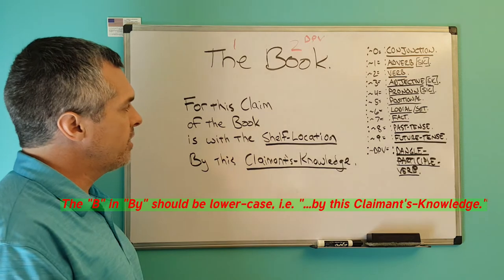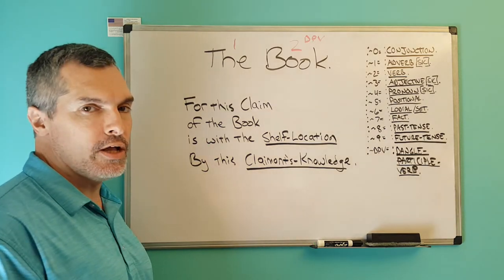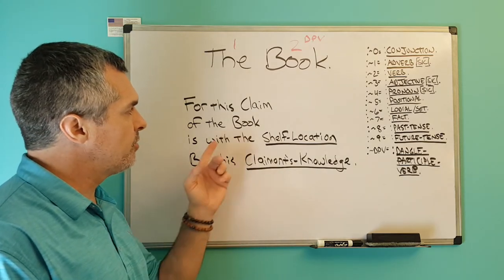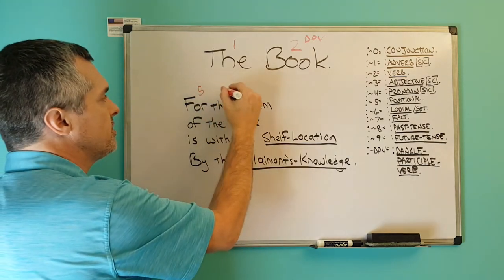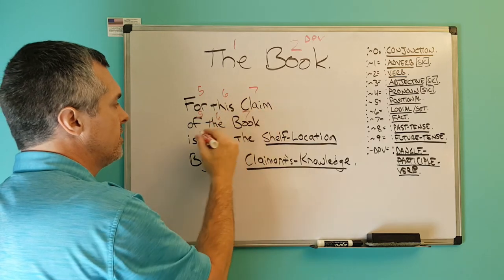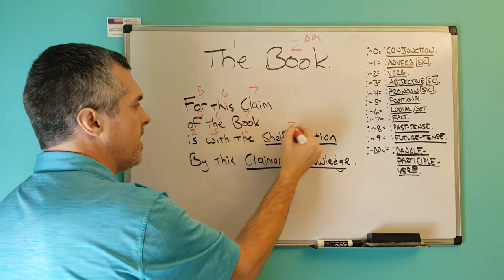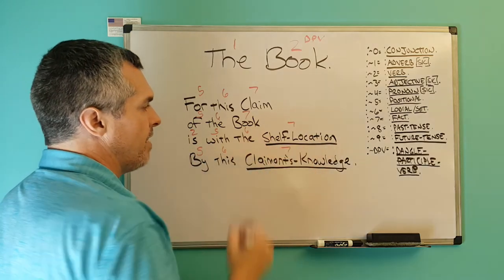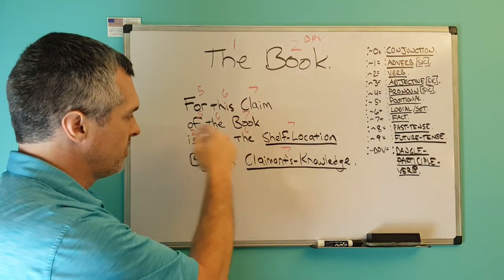For this claim of the book is with the shelf location by this claimant's knowledge. Backwards, that is: for this claimant's knowledge of the shelf location is with the book by this claim. We syntax that it's positional lodgial fact, positional lodgial fact, verb, positional lodgial fact, positional lodgial fact. The verb is positioned here correctly.